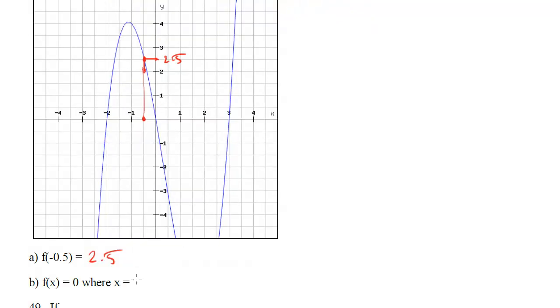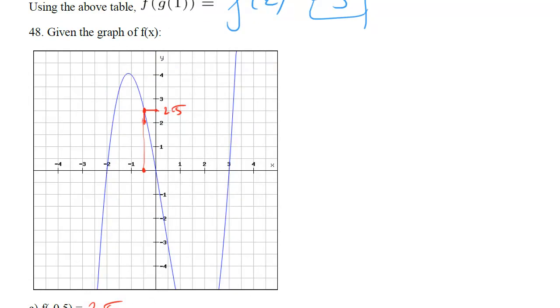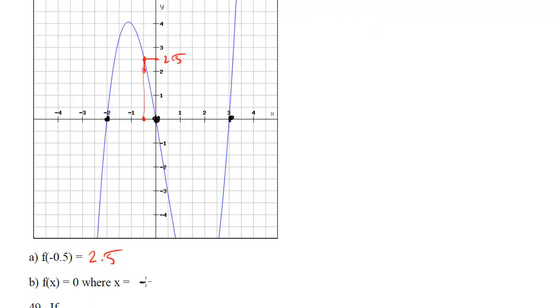f of x equals 0 where x equals, so we want to know where does the function equal 0? Where does the function hit the x axis? So that's going to be here at negative 2, here at 0, and here at 3. So our three answers are negative 2, 0, and 3.